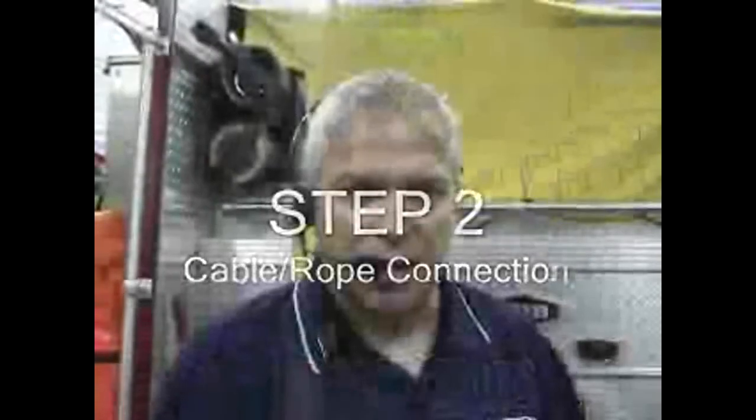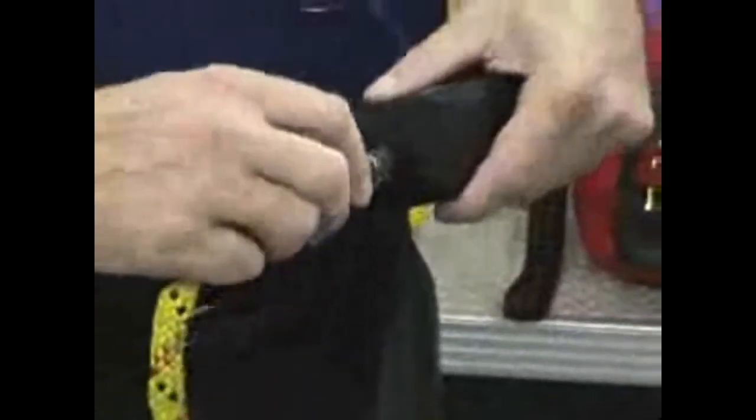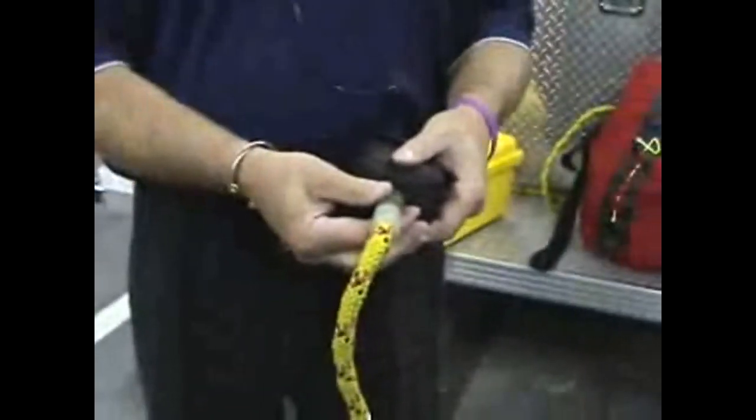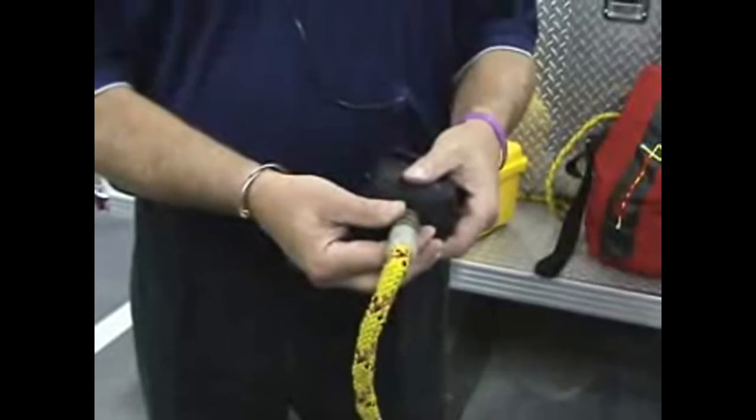Once the headset is connected to the interface, we now connect the cable or the communication rope to the interface. A significant click tells you there's a secure connection with this military style connector.